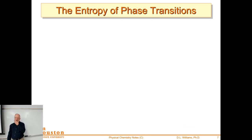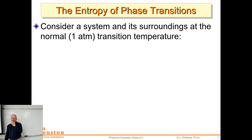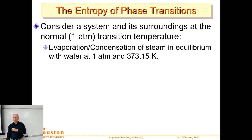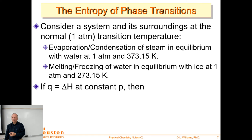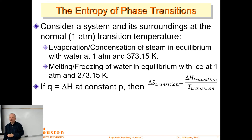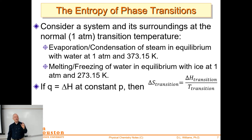Let's look at standard entropy values. We can calculate the entropy of phase transitions. For a system and surroundings at one atmosphere, we look at evaporation and condensation (water to steam and back) at 373 K, or melting and freezing at 273 K. The heat for these transitions is delta H of transition — take that enthalpy from tables, divide by the temperature, and you get the entropy change. For delta H of vaporization for water, divide by 373 K and you know the entropy change. That's pretty simple.